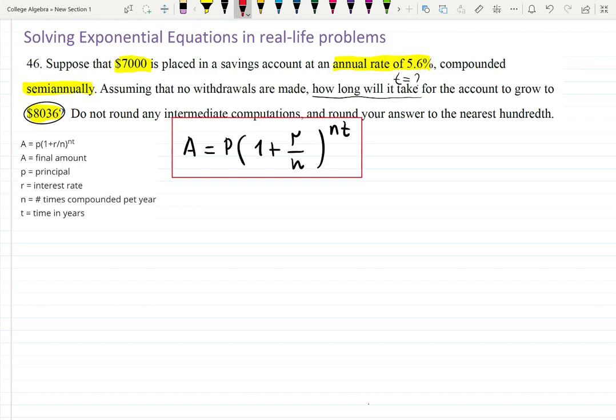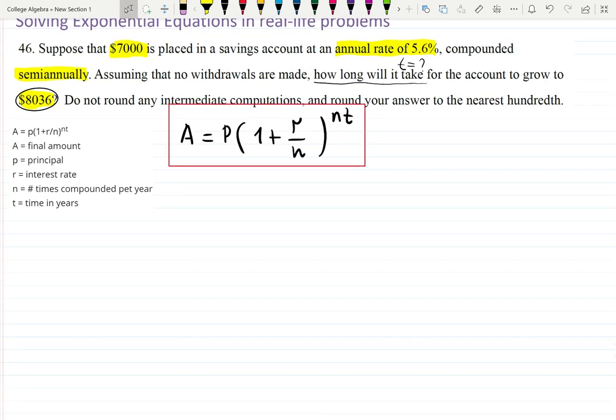You need to carefully figure out what is going on here—what all these variables and constants mean in the formula. So the principal P, that's why I usually use P, is whatever we invested. We invested seven thousand.